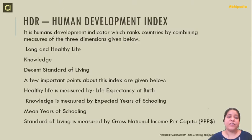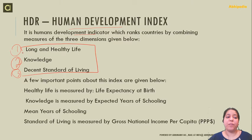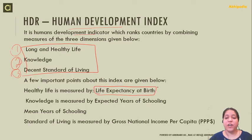The Human Development Index has three dimensions. One is a long and healthy life, second is knowledge, and third is a decent standard of living. Healthy life is measured by life expectancy at birth, which covers infant mortality rate and maternal mortality rate.